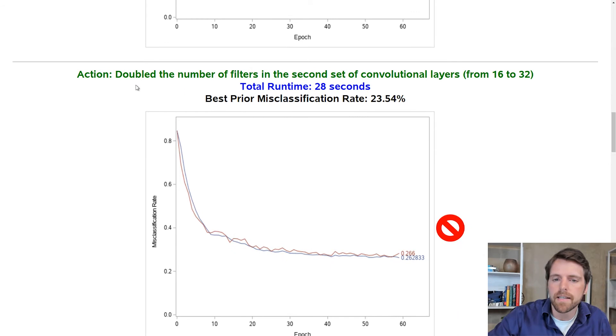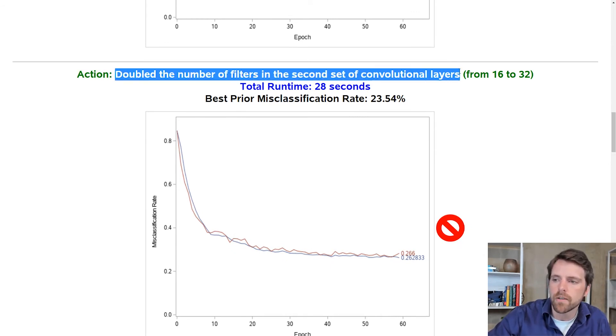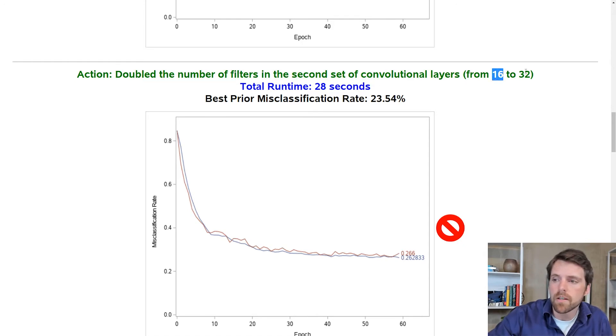The next change that I made is that I doubled the number of filters in the second set of the convolutional layers. So I doubled the number from 16 to 32. In this case the time increased from 24 to 28 seconds. But the performance of the model did not improve. So I doubled the number of filters on the first convolutional layer. It improved the model performance. So why not try it on the second convolutional layer? It didn't work well. So that was not the right move. Therefore I undid that change.